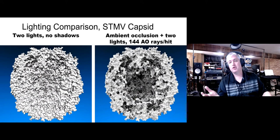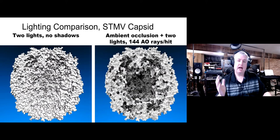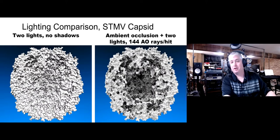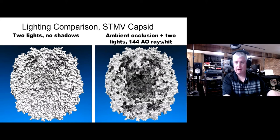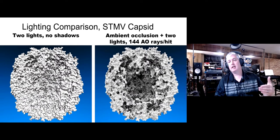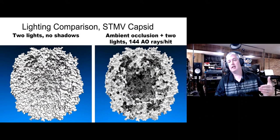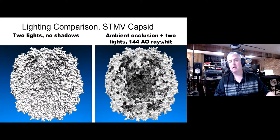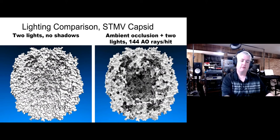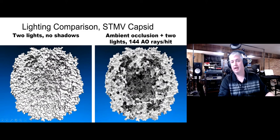Scientists are typically very busy and want an informative image as rapidly as possible. Ambient occlusion is a global property that can be boiled down to three or four parameters total — essentially an on/off switch, a strength, and a maximum occlusion distance. Those are global properties requiring very little fiddling on the part of the scientist, taking you from the flat image on the left to the informative one on the right.